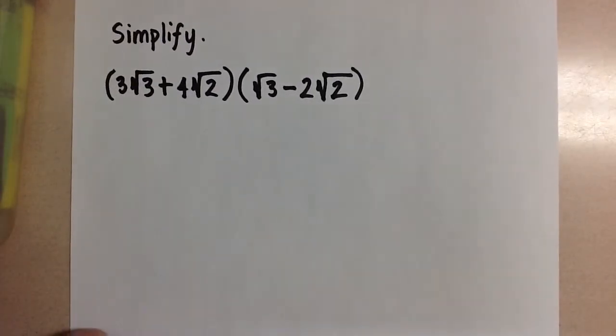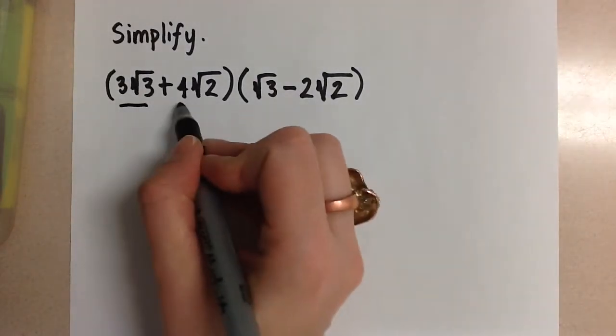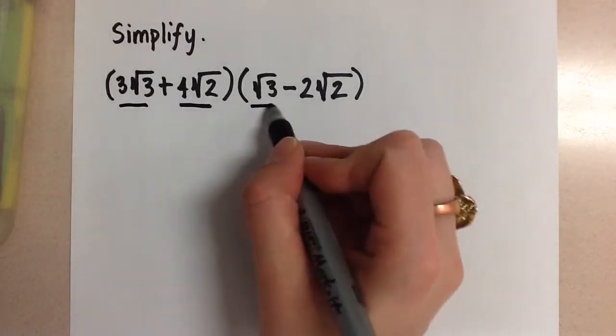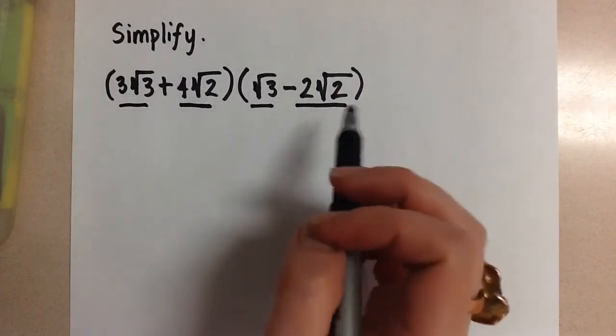We are simplifying this expression which contains radicals. So here we see that we have a two term polynomial times a two term polynomial. This means we have a binomial times a binomial.